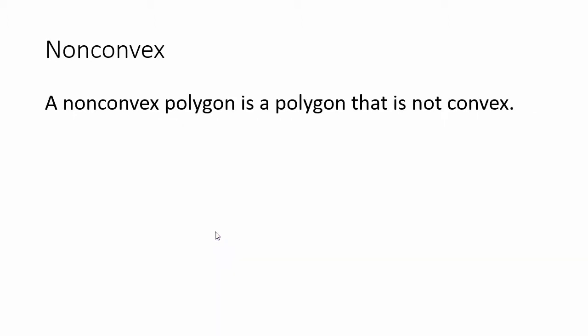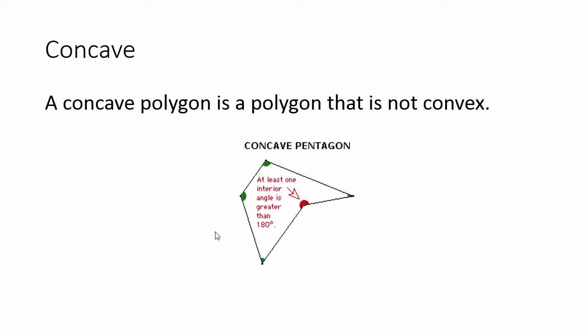Non-convex: a non-convex polygon is a polygon that is not convex, meaning it is concave. A concave polygon is not convex, and you know that because if you were to extend the line, notice how it goes through the interior of the polygon — therefore it is not convex, it is concave.